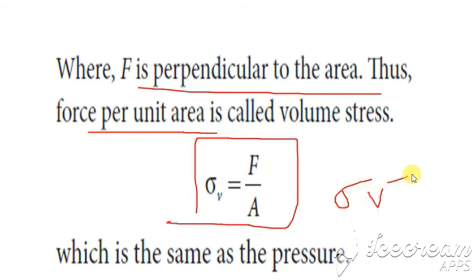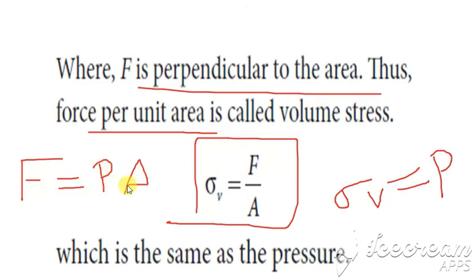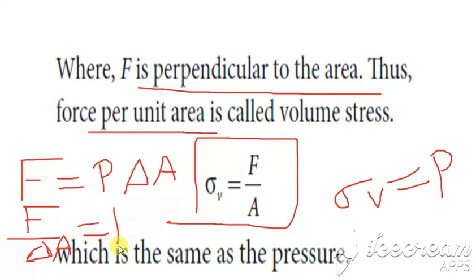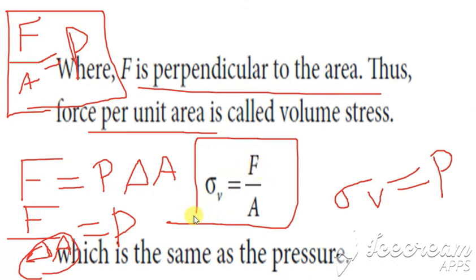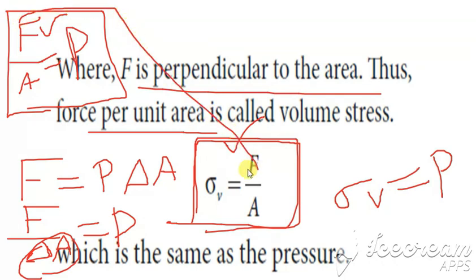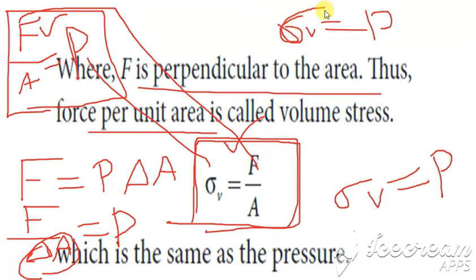Volume stress is the same as pressure. From F = P × ΔA, we can write F / ΔA = P. Since stress = F/A, comparing both expressions gives volume stress (ΔV) = P. So volume stress equals pressure.